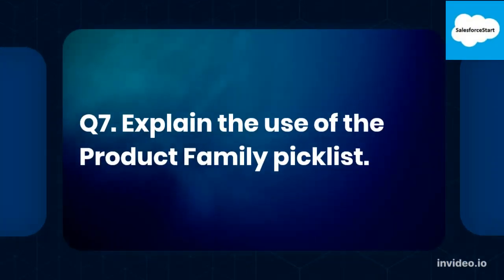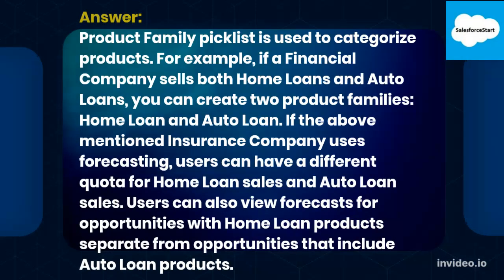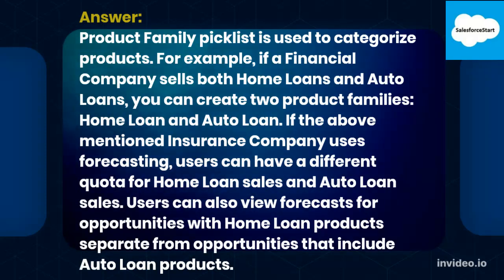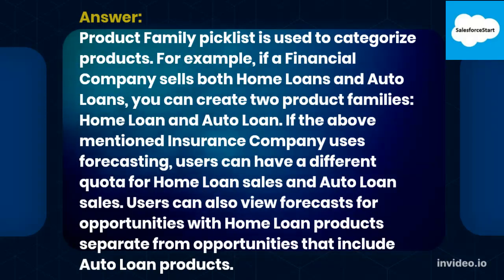Q7. Explain the use of the Product Family Picklist. Answer. Product Family Picklist is used to categorize products. For example, if a financial company sells both home loans and auto loans, you can create two product families: home loan and auto loan. If the company uses forecasting, users can have a different quota for home loan sales and auto loan sales. Users can also view forecasts for opportunities with home loan products separate from opportunities that include auto loan products.